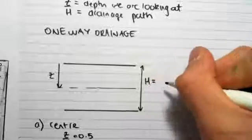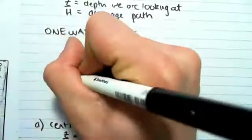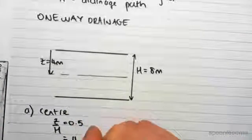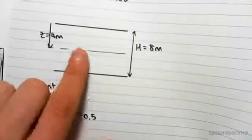I can show you this with numbers. Say H was 8 meters, and that means that Z would be 4 meters to the centre of the layer. The Z on H would be 4 on 8, which is 0.5. If you're ever confused, you can always just make up some numbers to see what's going on.